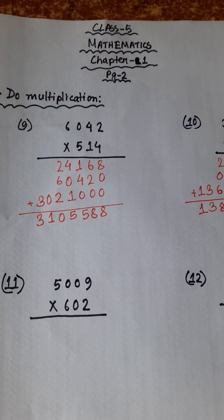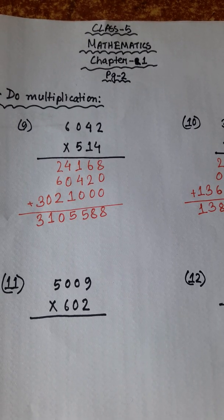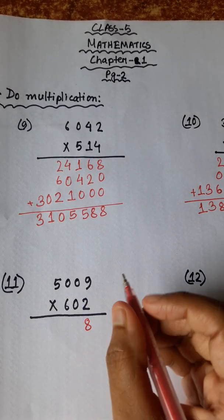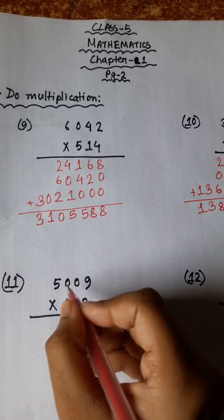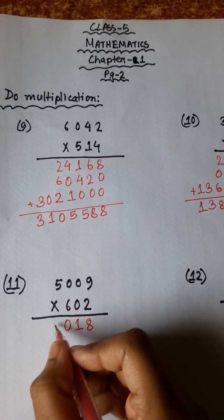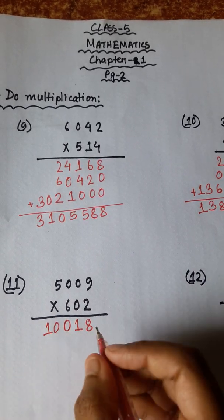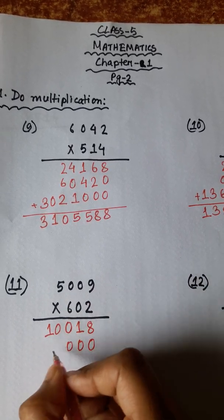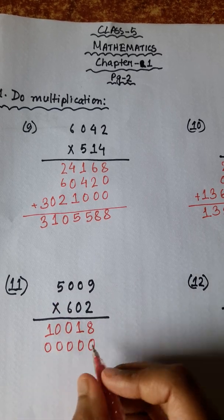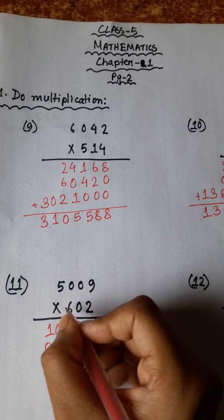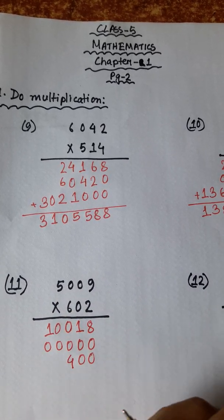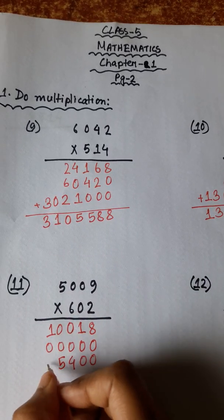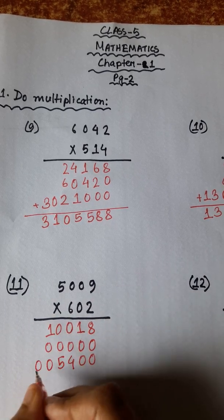Number 11: 5009 multiplied by 602. 9 twos are 18, carry 1. 2 zeros are zero, plus 1 is 1. 2 zeros are zero. 5 twos are 10. 9 zeros are zero. 5 sixes are 54, carry 5. 6 zeros are zero, plus 5 is 5. 5 sixes are 30.